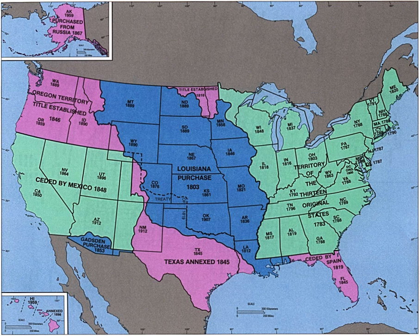Red River: The parts of Rupert's Land and the Red River colony south of the 49th parallel in the basin of the Red River of the North were acquired in 1818 from Britain under the Anglo-American Convention of 1818.